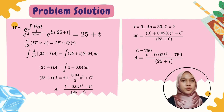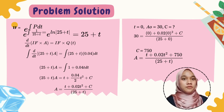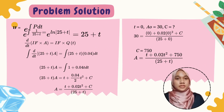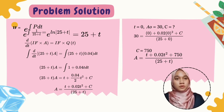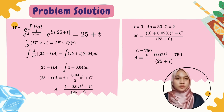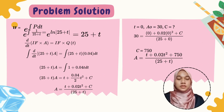After substituting the integrating factor and Q(t), we integrate both sides to get: (25 + t) × A equals t + 0.02t² + C. Rearranging for A in terms of t gives: A equals (t + 0.02t² + C) divided by (25 + t).